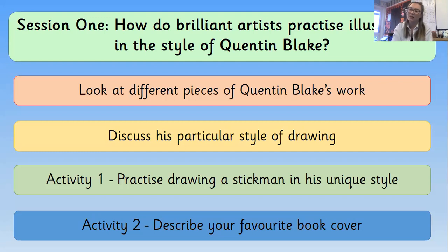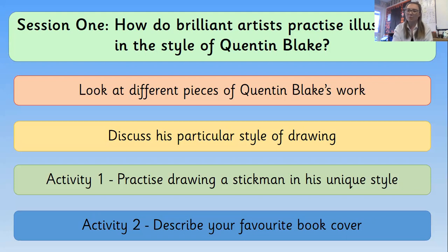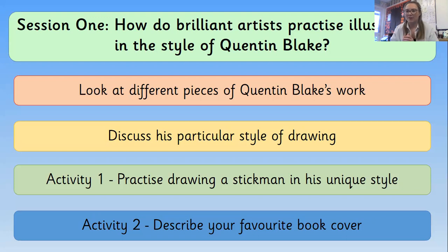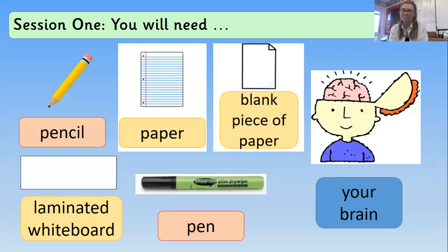We're going to do some practicing before we do some of our own Quentin Blake style drawings. Today we'll focus on looking at some different pieces of his work, particularly front covers of books. We'll talk about his distinctive style, do a practice drawing for activity one, and then describe our favourite book cover for activity two. You'll need some lined paper for writing and plain paper for drawing.